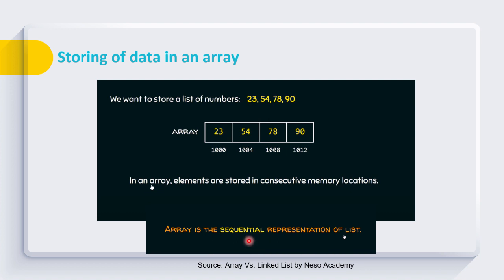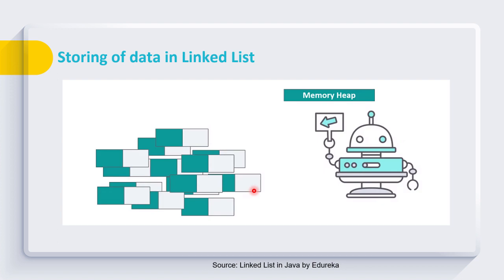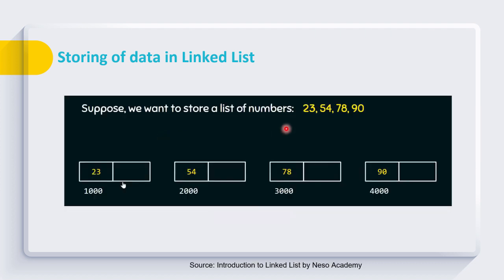An array is simply considered as a sequential representation of a list. While in case of linked list, the area is assigned by the memory heap. Memory heap assigns some random areas in memory to store these data values. As shown here, four random memory locations are assigned by memory heap — let us suppose 1000, 2000, 3000, and 4000 — and in these memory locations we have stored our data.